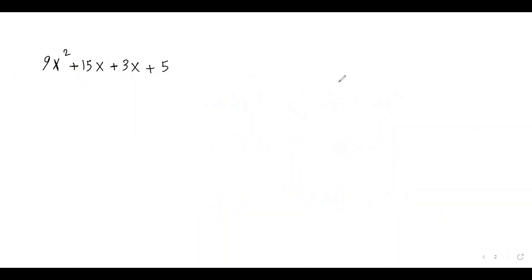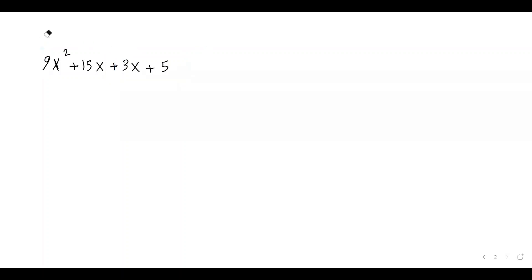Let's do another example: 9x squared plus 15x plus 3x plus 5. Again, I have a polynomial expression with four terms. The first thing we need to do is group terms with a common factor. Looking at the first and second terms, they have x and 3 in common. But we have to pay attention — the second two terms, 3x and 5, do not have anything in common, so I cannot just group the first two and last two together.